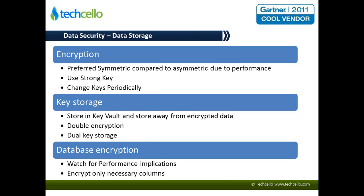Coming to data security, when you are dealing with data security you have two kinds of it. One is dealing with security of data at storage, and the next one is dealing with security of data while it is in transit. When talking about data storage security, encryption is the mostly used technique to secure sensitive data. For example, a column called credit card number or password or social security number — you will be encrypting the data and storing it in your database.